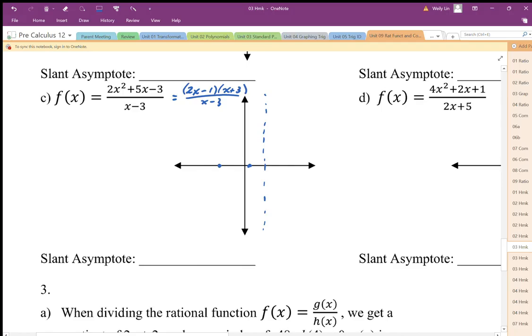And then I'm going to substitute in x equals 0 to get my y-intercept. Y-intercept is at positive 1, and when I do long division I'm going to end up with my slant asymptote.